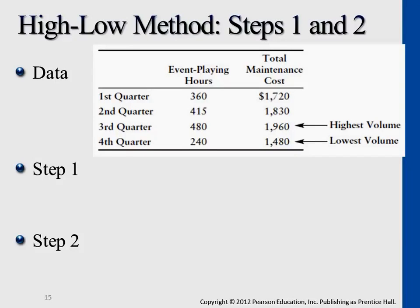The fixed portion is the same every season, so you can use whichever data points you like. If you put all this information together, you get a general equation based on these data points: total cost equals the fixed portion of $1,000 plus $2 multiplied by whichever hours are incurred. This is what we're trying to get to at the end — step one is the slope.